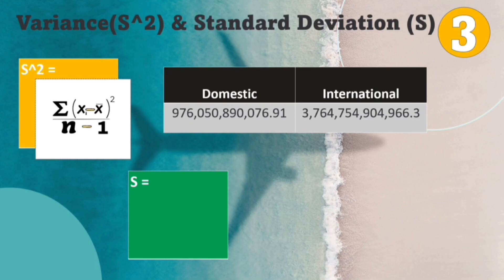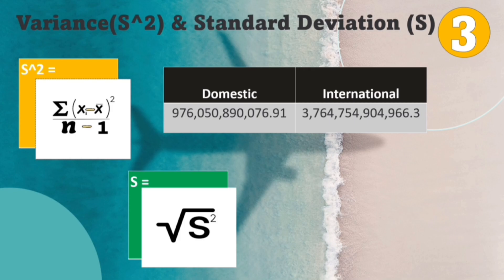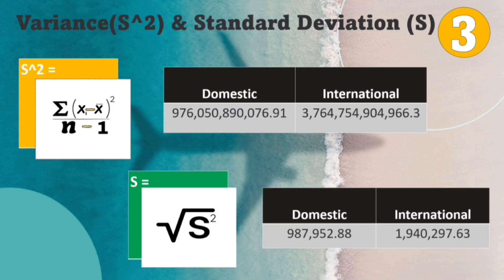Next is variance and standard deviations. In this measurement, we will highlight the standard deviations for our final answer. For variance, we used the formula: sum of observations minus the mean sample, squared, divided by the sample size minus 1. For standard deviations, we take the square root of the variance. Our group found that domestic is the lowest in standard deviations at 987,952.80 passenger traffic, and international was the highest at 1,940,297.63 passenger traffic.